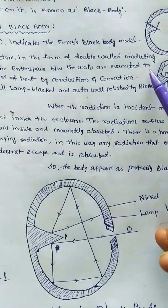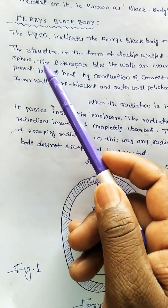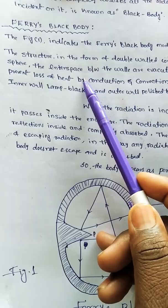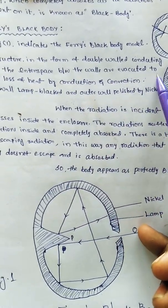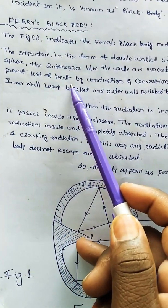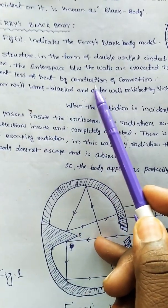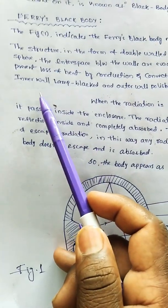The interspace between the walls are evacuated to prevent loss of heat by conduction and convection. The inner wall is lamp-blacked and the outer wall is polished by nickel.